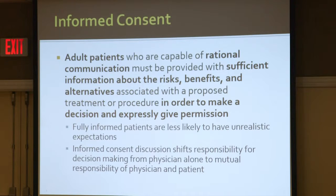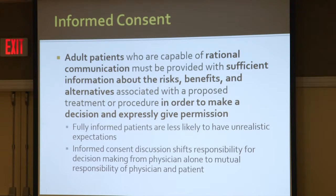The key take-home points: adult patients who are capable of rational communication and who aren't using a representative must be provided with sufficient information about the risks, benefits, and alternatives associated with the treatment or procedure in order to make a decision. And not just that — they must expressly give permission. They have to say yes, possibly after answering questions, and they must sign the consent confirming they have been provided adequate informed consent.